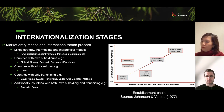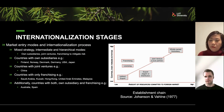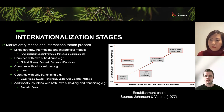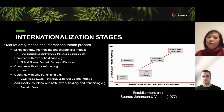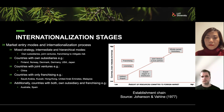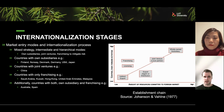Looking at the stages and entry modes, IKEA has had a mixed strategy across different markets. They have their own subsidiaries, joint ventures, and franchising to mitigate risk. Countries with own subsidiaries include Finland, Norway, Denmark, Germany, and the US — markets with fairly low psychic distance. They use joint ventures in China, and franchising in markets like Saudi Arabia, Kuwait, Hong Kong and Malaysia. Within the same market they sometimes mix modes — for example, in Australia and Spain they have both own subsidiaries and franchising.